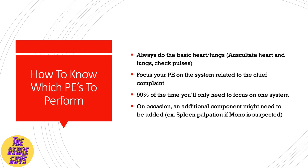How do you know which physical exam to perform? Always do a basic heart and lungs — listen to the heart, check the pulses, listen to the lungs. Then focus your physical exam on the system related to the chief complaint. There are a ton of complaints that fall under only a handful of systems: neuro, abdominal, HEENT, cardiovascular, pulmonary. Ninety-nine percent of the time, you only need to focus on one system. On occasion you might slip something else in — for example, if you suspect mononucleosis, an enlarged spleen is a concern, so you might quickly palpate the spleen. But this is more of an exception than a rule.